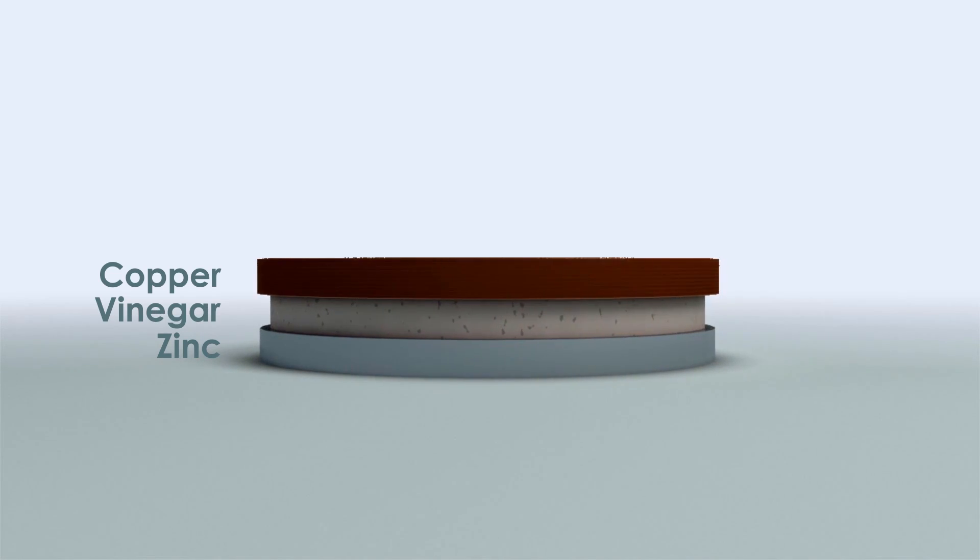The vinegar is going to make the zinc oxidize, which means it's going to lose electrons that can travel through a circuit, into the copper, and be gained by the ions in the solution.